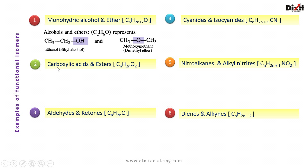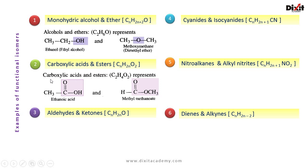Example 2: carboxylic acids and esters. Both are represented by the same general formula CnH2nO2. In carboxylic acids the functional group is carboxyl (-COOH); in esters the functional group is alkoxycarbonyl. The molecular formula C2H4O2 represents ethanoic acid and methyl methanoate — they are functional isomers of each other.